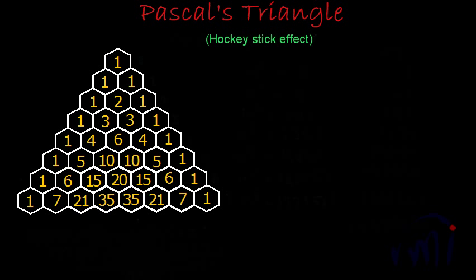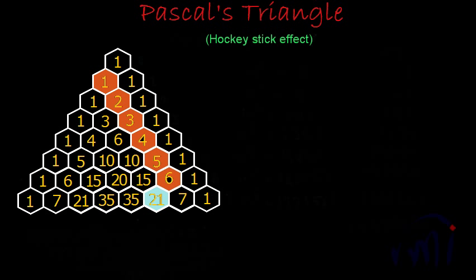Let me take a slightly longer hockey stick this time. If I start from here: 1 plus 2 plus 3 plus 4 plus 5 plus 6. 1 plus 2 is 3, 3 plus 3 is 6, plus 4 is 10, plus 5 is 15, and plus 6 is 21. And 21 is written over here, which is in the bend of the hockey stick.